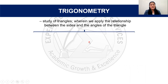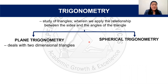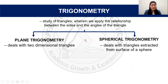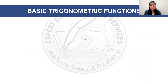Trigonometry could be subdivided into plane and spherical. Plane deals with triangles that are two-dimensional, while spherical deals with those that are extracted from the surface of a sphere. Under plane trigonometry, it could be subdivided into solving two types of triangles: the right triangle and the obtuse triangle. We will be focusing more on right triangles.